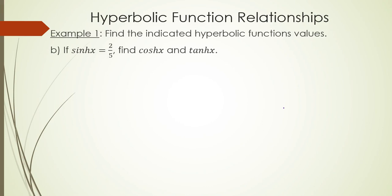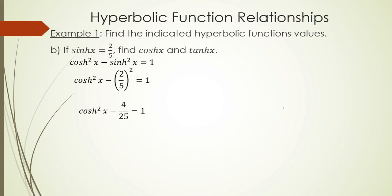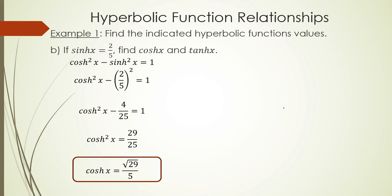Part B: if hyperbolic sine of x equals 2/5, find hyperbolic cosine and hyperbolic tangent. We start with the identity: hyperbolic cosine squared minus hyperbolic sine squared equals 1 — this is not the same as the Pythagorean identity. Plugging in 2/5 for hyperbolic sine, we get hyperbolic cosine squared of x minus (2/5)² equals 1. Subtracting 4/25 gives hyperbolic cosine squared of x equals 29/25. Square rooting both sides gives square root of 29 over 5 as hyperbolic cosine.